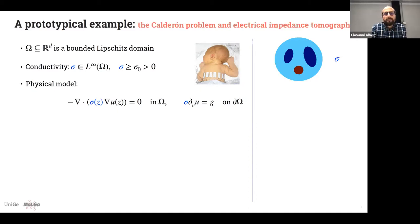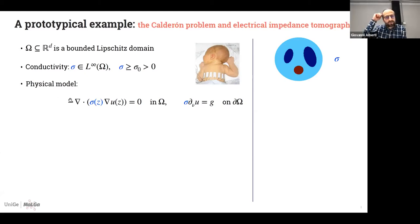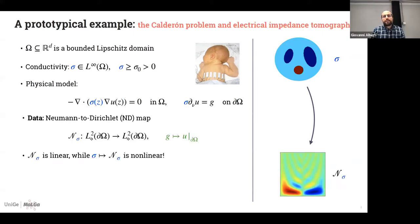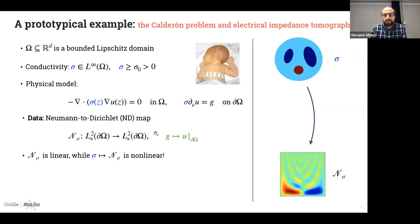The problem is to reconstruct the conductivity sigma in a bounded domain omega. The physical model is the conductivity equation, which is a simpler model for Maxwell's equations in the case of electrical currents. This equation holds inside the domain where sigma is the conductivity, U is the electric potential, and there is a Neumann-type boundary condition — meaning we apply a current on the boundary. The data we can measure is the Neumann-to-Dirichlet map: every time we inject a boundary current G through the electrodes, we measure the corresponding potential U on the boundary.